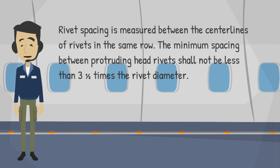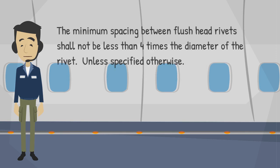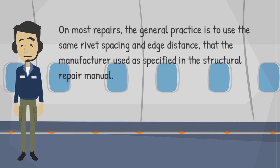Rivet spacing is measured between the center lines of rivets in the same row. The minimum spacing between protruding head rivets shall not be less than 3 and 1/2 times the rivet diameter. The minimum spacing between flush head rivets shall not be less than 4 times the diameter of the rivet, unless specified otherwise. On most repairs, the general practice is to use the same rivet spacing and edge distance that the manufacturer used as specified in the structural repair manual.